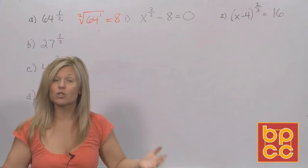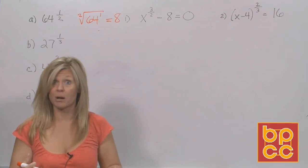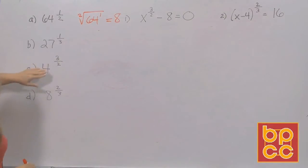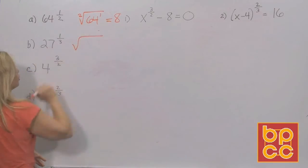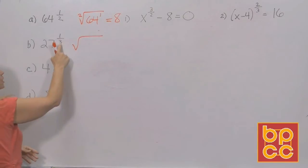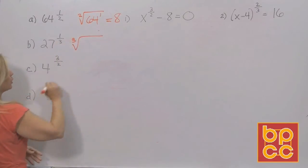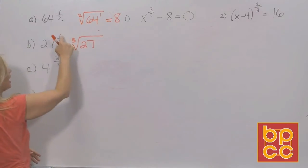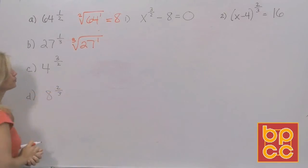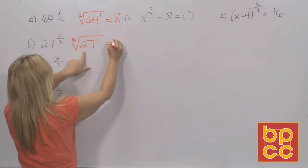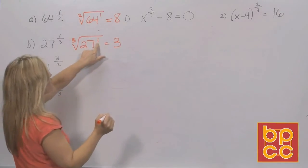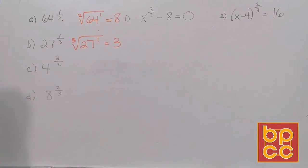For 27 to the one-third, we rewrite this as a root. The denominator is 3, so this is a cube root of 27, with an exponent of 1. What number multiplied 3 times gives you 27? That's 3. And 3 to the first power is 3.